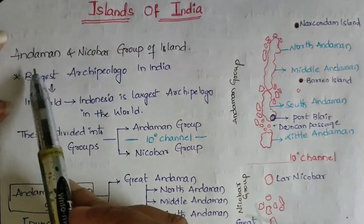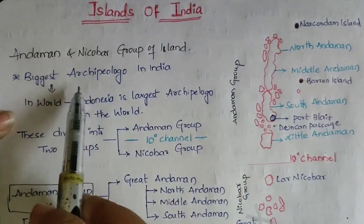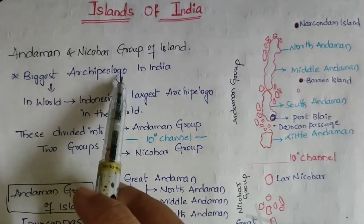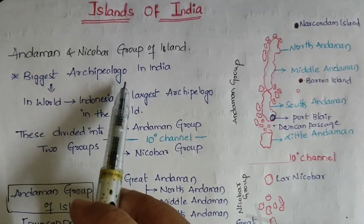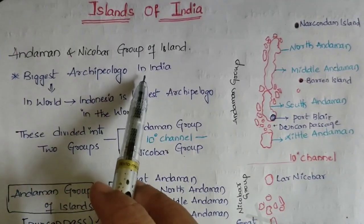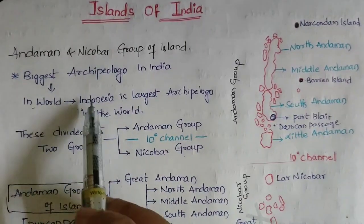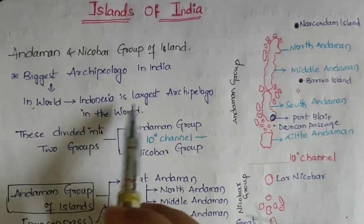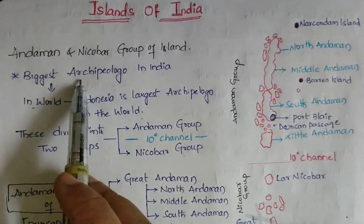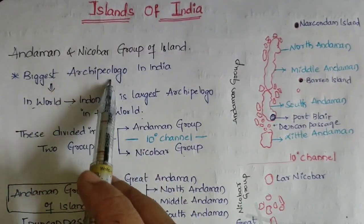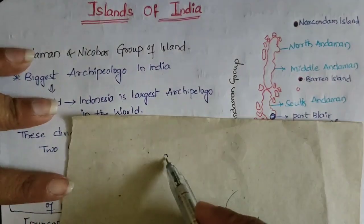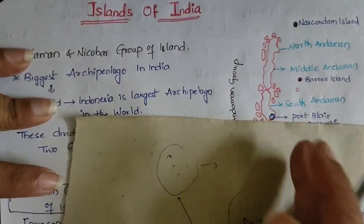Andaman and Nicobar Islands — it is the biggest archipelago in India. An archipelago is nothing but a group of islands. In the world, Indonesia is the largest archipelago. So in India, Andaman and Nicobar is the biggest archipelago — an extensive group of islands.